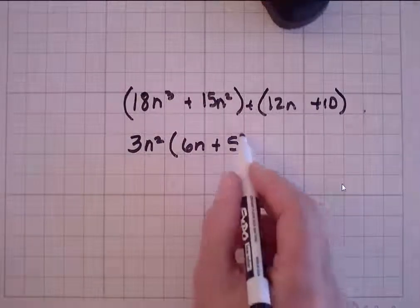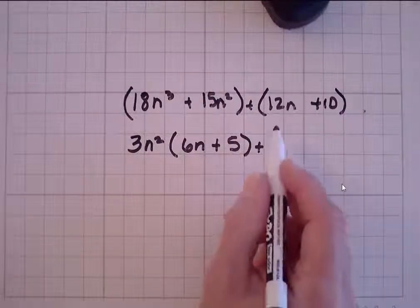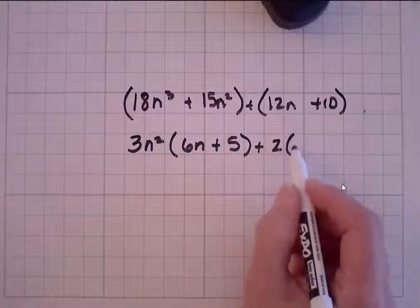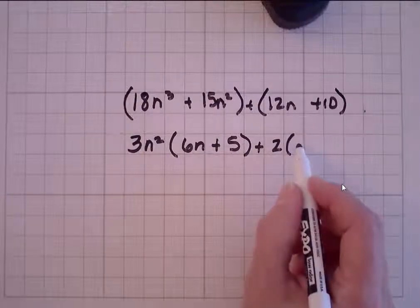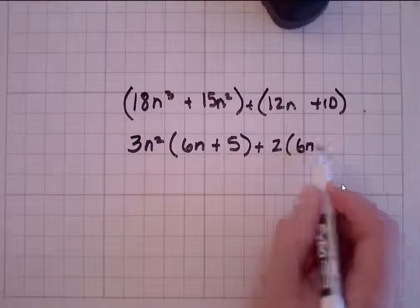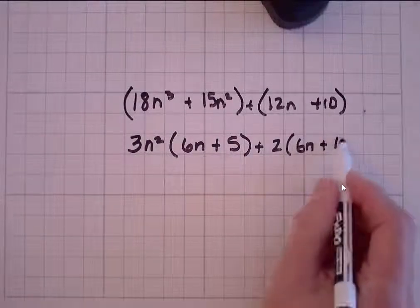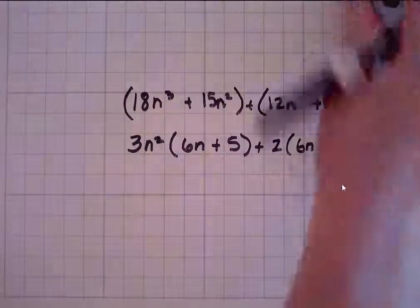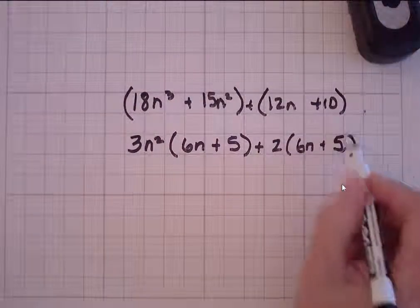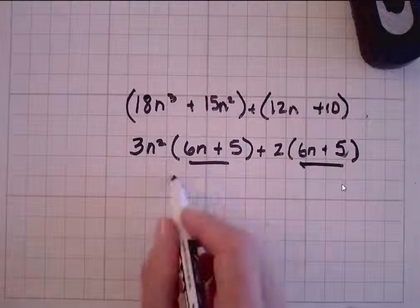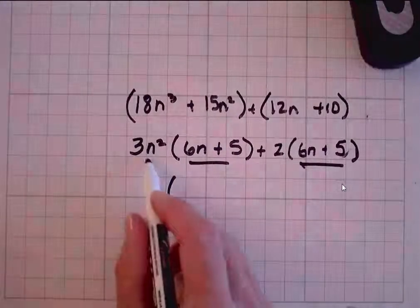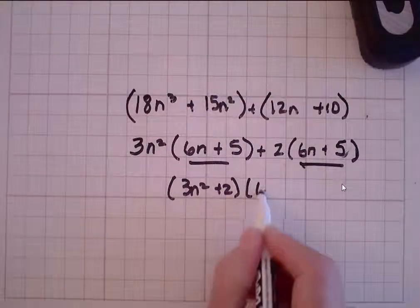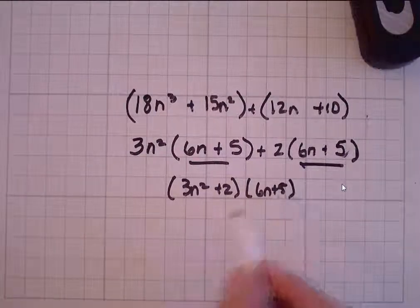15 divided by 3 is 5, and n squared divided by n squared is 1, so we don't need to write that. Now for 12 and 10: the only factor they have in common is a 2. 12 divided by 2 is 6, and 10 divided by 2 is 5. As you can see, these are identical. So to factor them, I'm going to bring my 3n squared down, plus 2, and then use 6n plus 5 in the second set of parentheses, and I'm done.